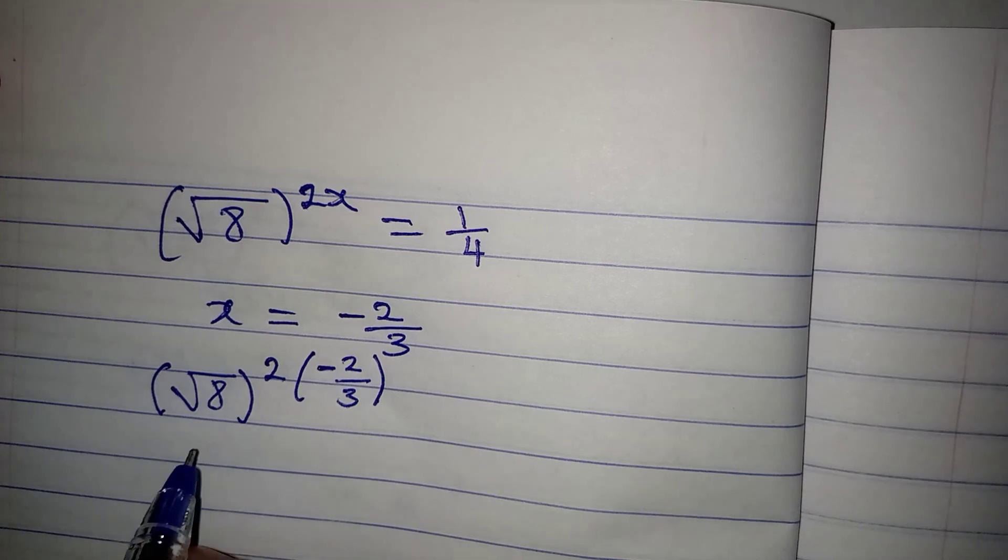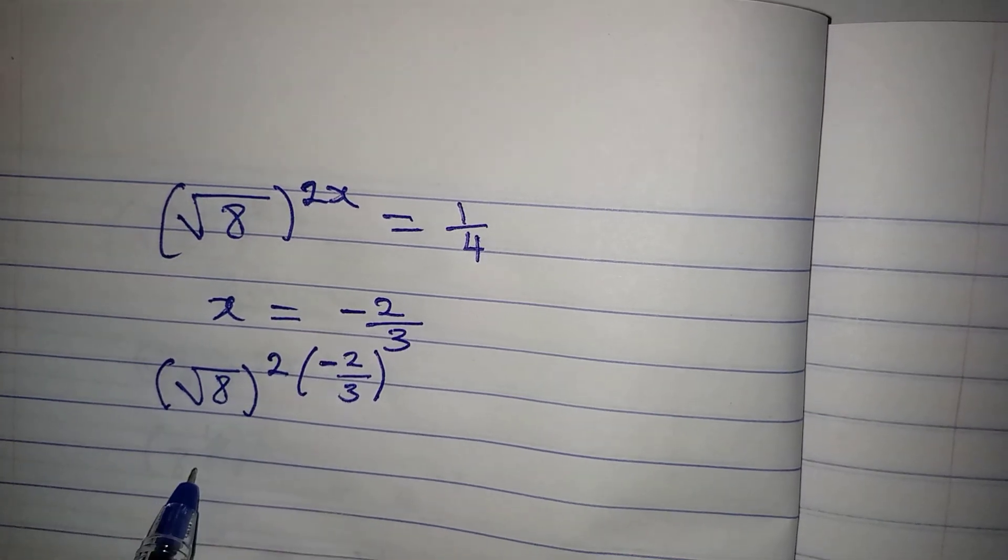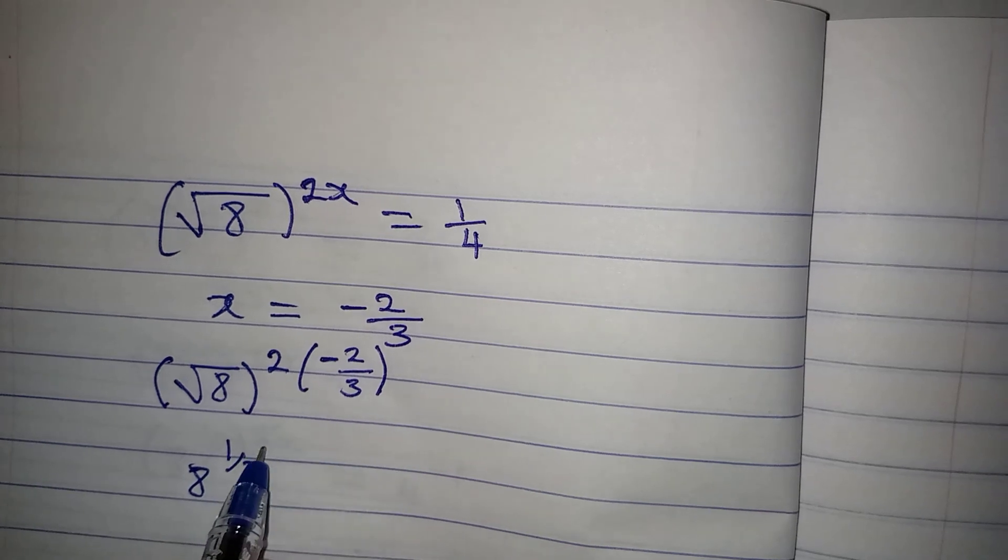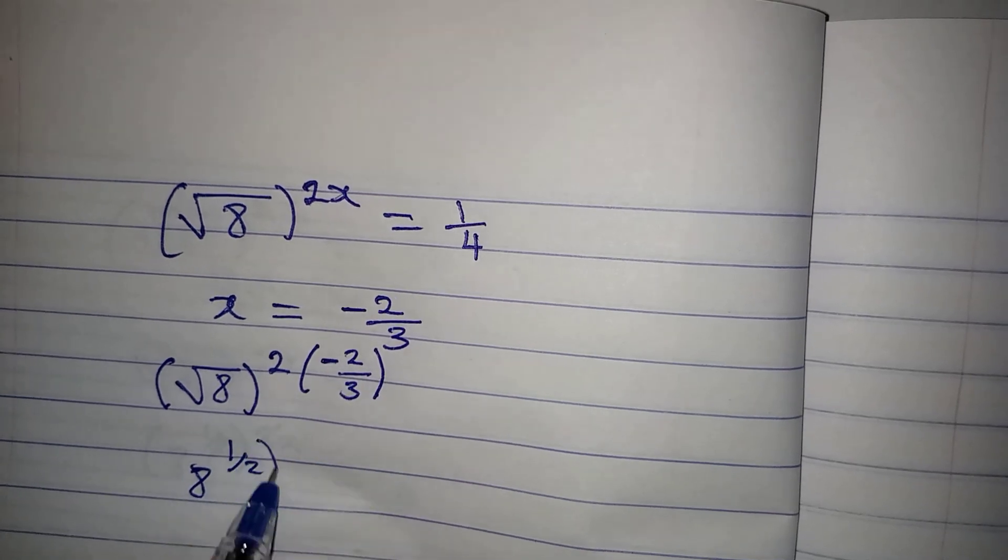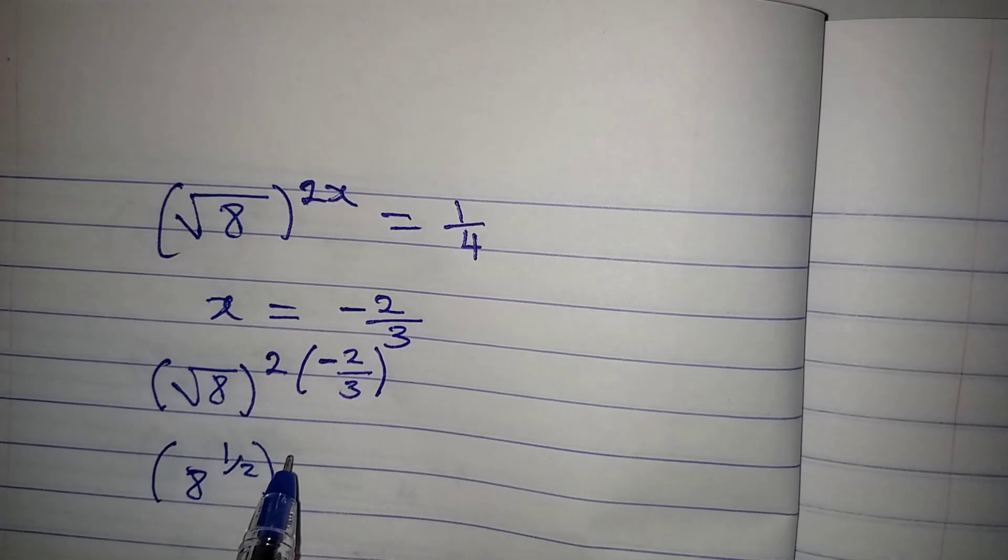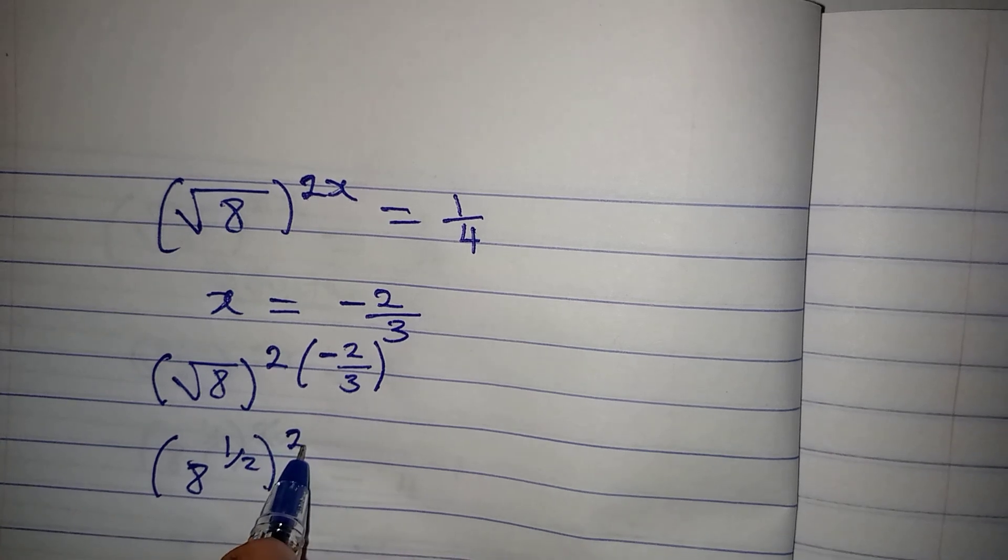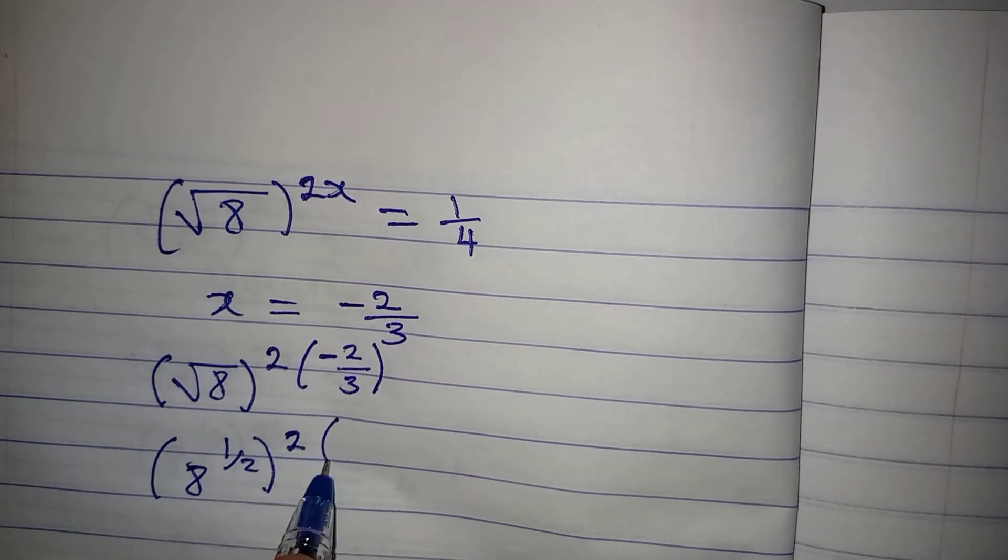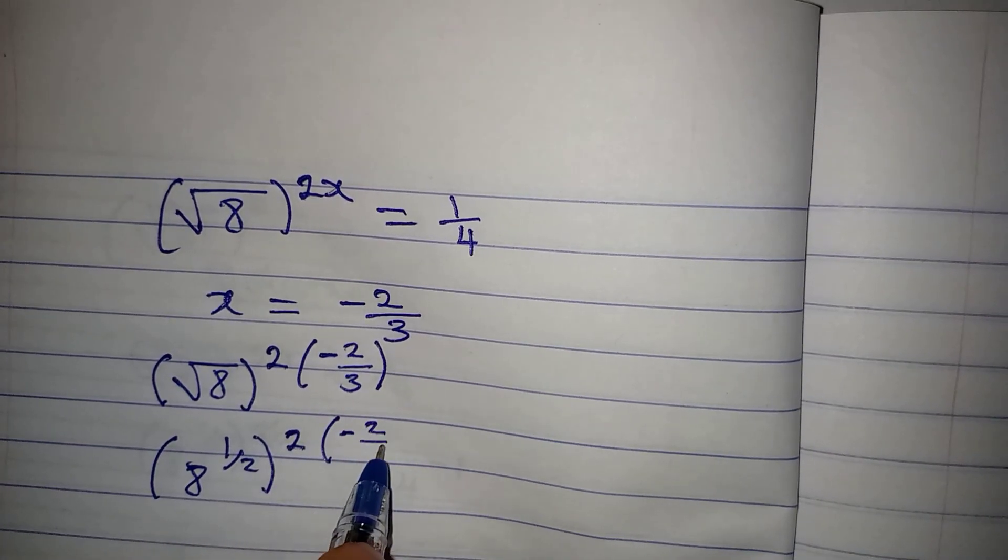And I said, 8 here, square root of 8 is 8 to the power of 1 over 2. Let this be in bracket. Then we have power of 2, then multiply by minus 2 over 3.